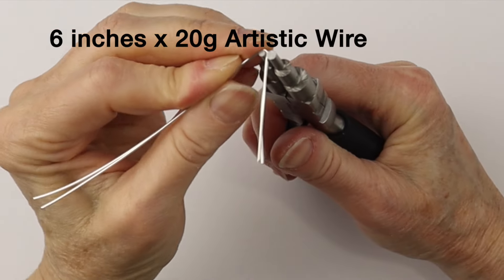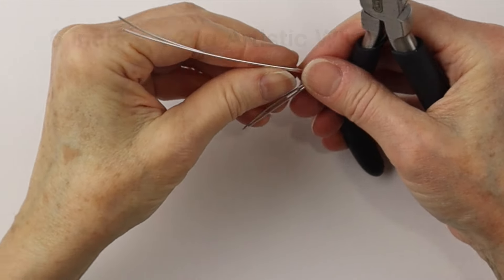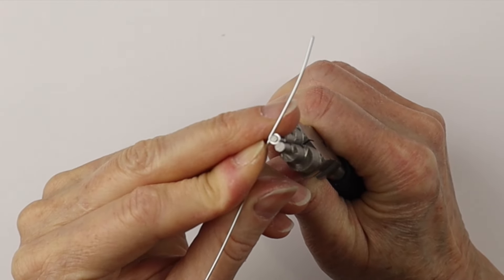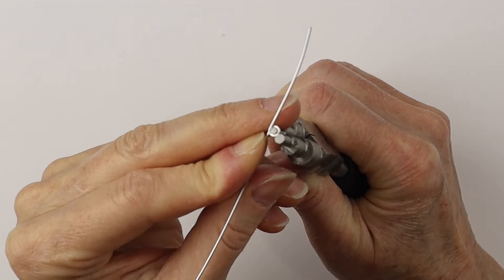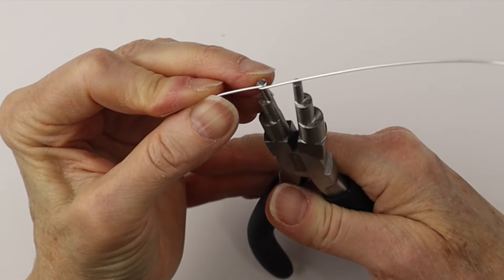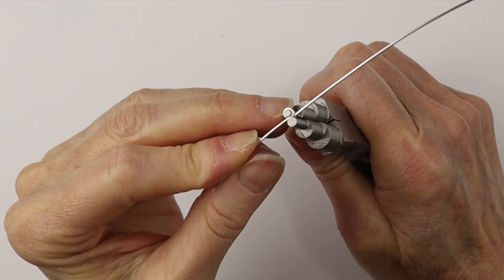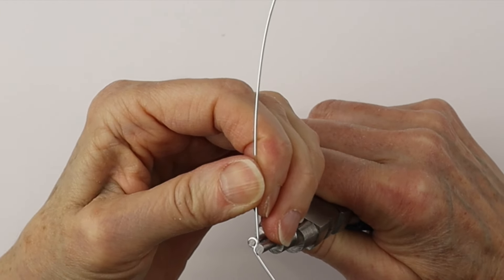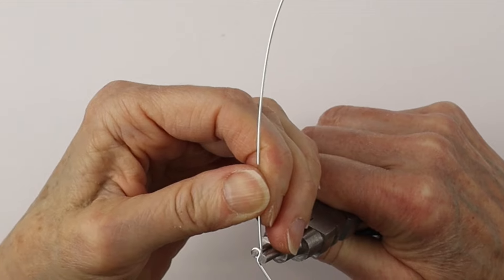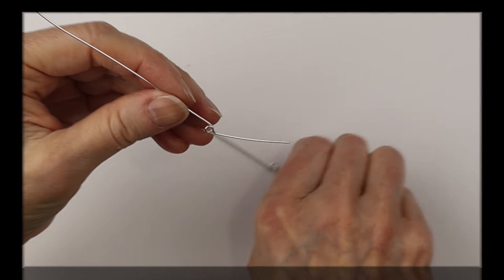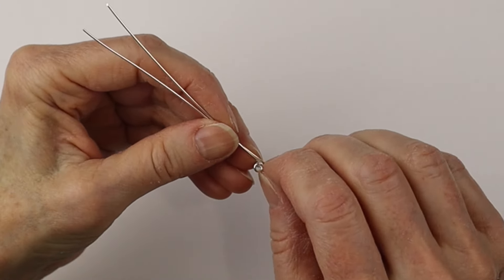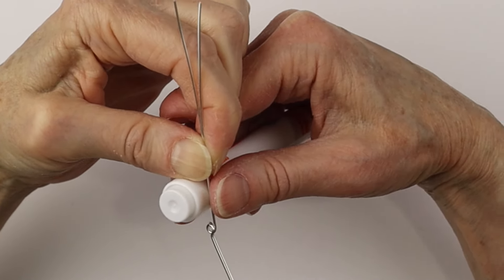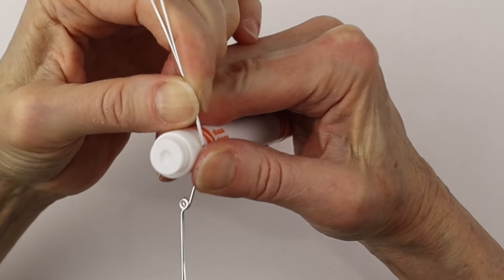Now if you want to make the beads dangling in the teardrop, we're going to do it slightly differently. We'll start the same way with the loop at the top, using our bail making pliers to make that little loop at the top. Then bend it out so it's nicely centered. Now we put the two wires together again to form the bottom of the teardrop.